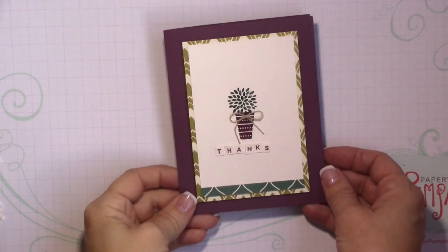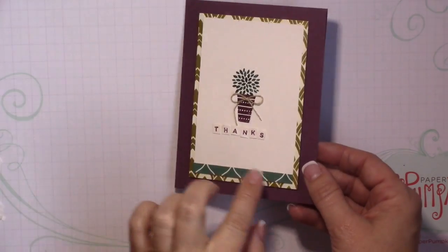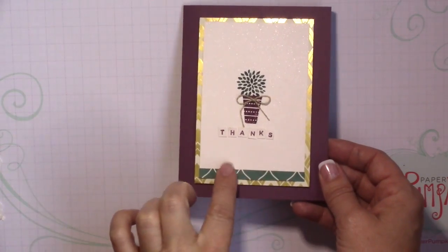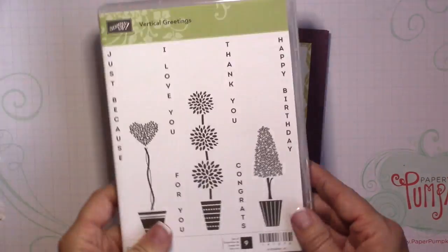Hey guys, we're going to make this card today using some of the supplies from the Eastern Palace Premier Bundle and then also from the Vertical Greetings Stamp Set. This is a stamp set that you can find in our annual catalog currently.